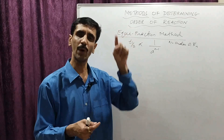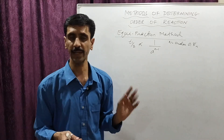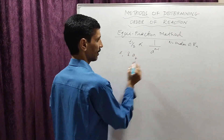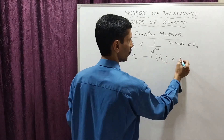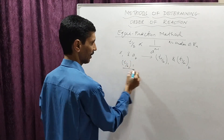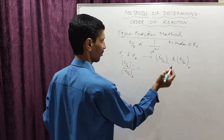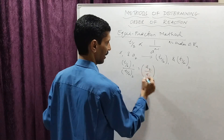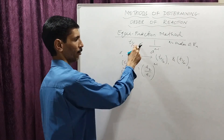This is the general formula: T half is proportional to 1 upon a raised to n minus 1, where n stands for the order of reaction. Now, assuming we have two initial concentrations a1 and a2, the corresponding half times will be T half 1 and T half 2. Taking the ratio, T half 1 divided by T half 2 equals a2 upon a1, raised to n minus 1.